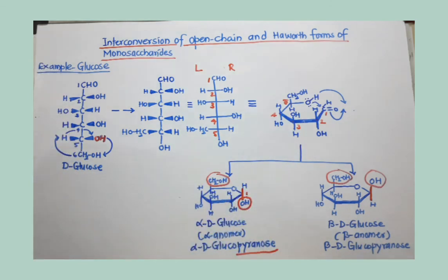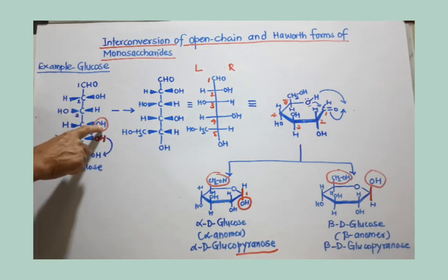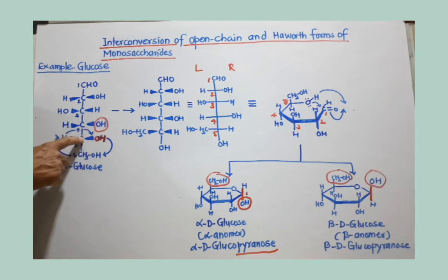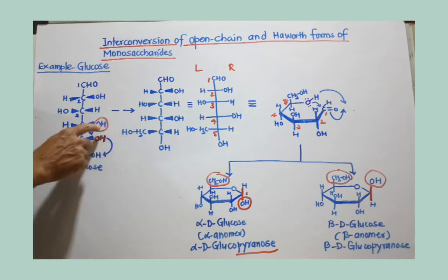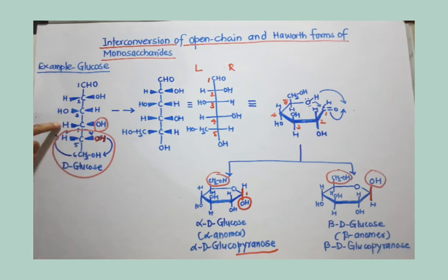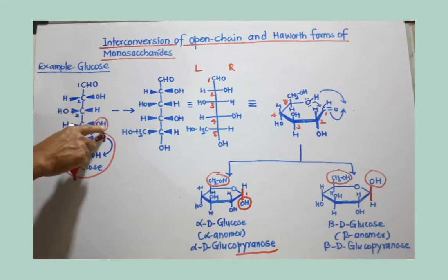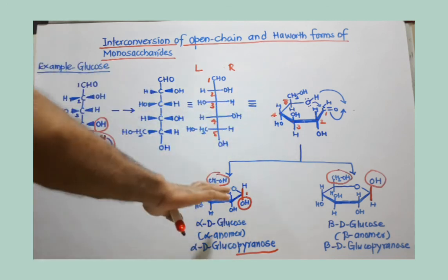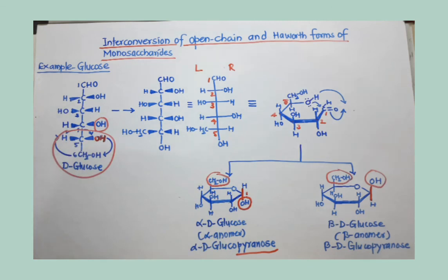You can try the five-membered ring by considering this OH at the fourth carbon — in that case you have to bring this OH to this position. This OH will come here and the whole group will come to the position of hydrogen, and hydrogen will take the position of OH. You can draw a five-membered ring instead, and that will be the furanose structure. We will see how that furanose structure is formed in the next video. Thank you so much.